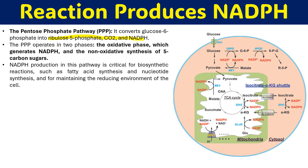The pentose phosphate pathway can be divided into two major phases. The first is the oxidative phase, where NADPH is produced. The second is the non-oxidative phase, which produces 5-carbon sugars. So the two important products of the pentose phosphate pathway are NADPH and 5-carbon sugar.